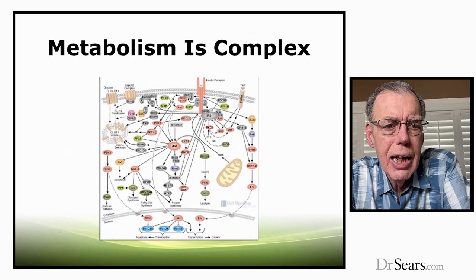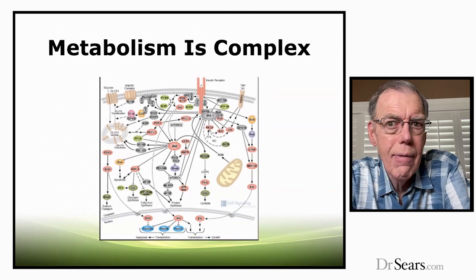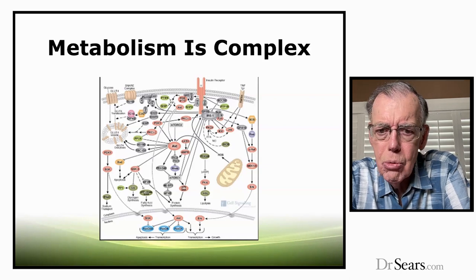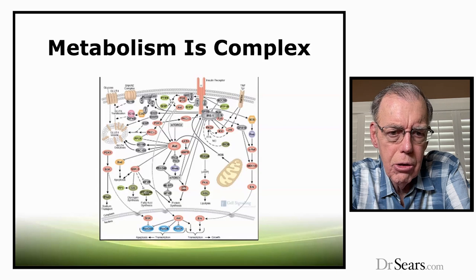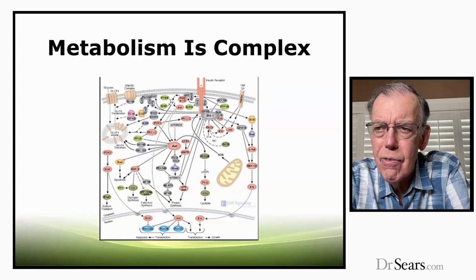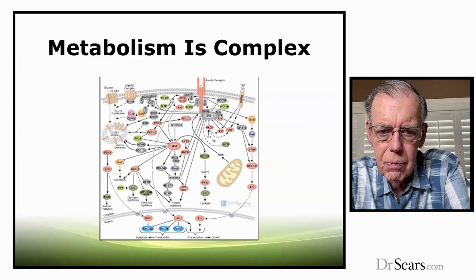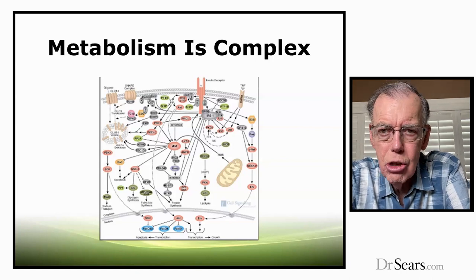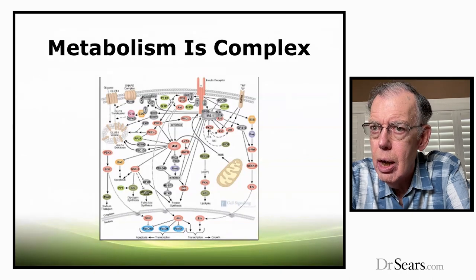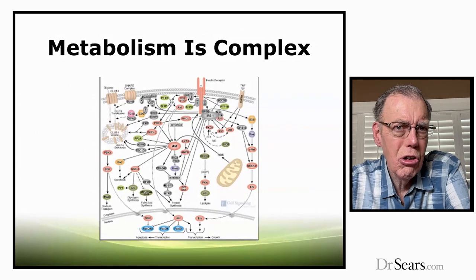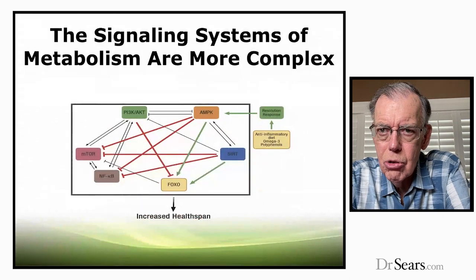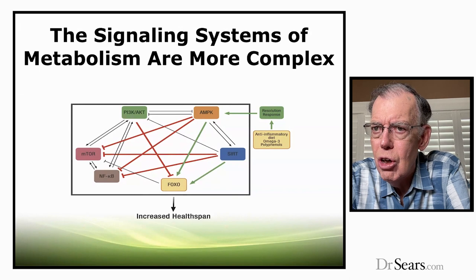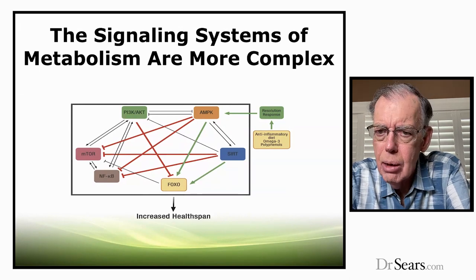This slide shows what happens in only one cell in your body — and remember, you have 37 trillion cells. Metabolism gets signals from outside the cell: it could be nutrients, hormones, or other compounds. That basically sets off a series of very complex and dynamic actions inside a cell. If those actions are working well, your metabolism is efficient and you stay well. These signaling systems control metabolism and turn cell function on and off on a second-by-second basis.